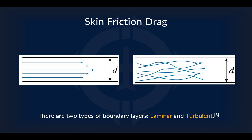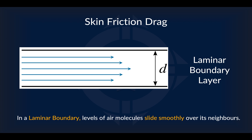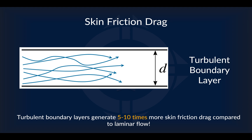There are two types of boundary layers: laminar and turbulent. In a laminar boundary layer, different levels of air slide past each other smoothly — this is the most preferred type, though it still generates skin friction drag. In a turbulent boundary layer, irregular turbulent flows and little eddies or vortices occur, and airflow is disrupted and thrown into chaos. This increases the size of the boundary layer and the amount of disruption within it, resulting in more air molecules being affected and a corresponding increase in friction drag. A turbulent boundary layer can generate five to ten times more skin friction drag compared to laminar flow.